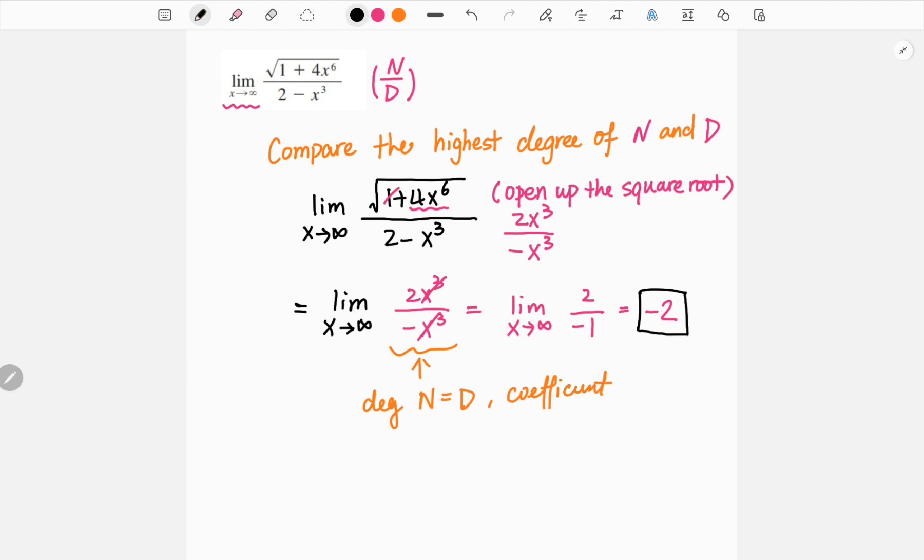Or if you want a more strict mathematical proof, you can also think of it this way: we can divide x³ on both the top and the bottom, which we would get the same answer.